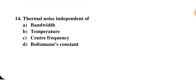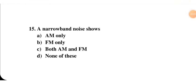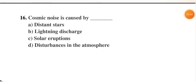Next question: noise shows — AM only, FM only, both AM and FM, or none of these. The answer is both AM and FM — here FM refers to narrow band FM, which is approximately similar to AM. So C is the correct answer. Cosmic noise is caused by — distant stars, lightning discharge, solar eruptions, or disturbance in the atmosphere. The correct answer is A — distant stars.